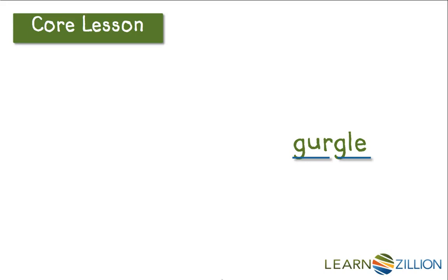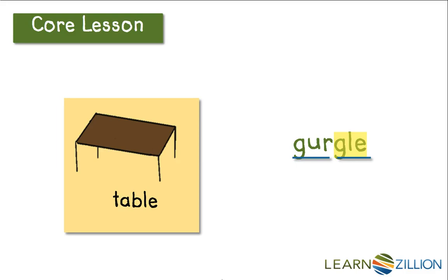Now I'm going to break this word down syllable by syllable. Let's look at the first one first. I know that G makes the G sound, and UR makes the ER sound. If I blend those together, this one sounds like GER. Now I'm going to look at the second syllable. I remember that it's a consonant LE syllable, and LE makes the UL sound like in table. I see a G, which says G, and then the LE. If I blend those together, this syllable sounds like G-UL. Now I can blend the first syllable with the second to read the word: GER-GUL — GURGLE.